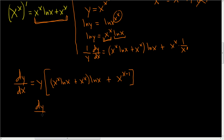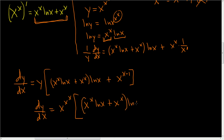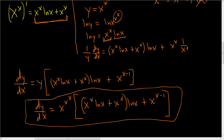So dy/dx — well, y was x to the x to the x. So the final answer is x to the x to the x times the bracket: x to the x times natural log of x, plus x to the x, in parentheses times ln x, plus x to the x minus 1. The key was to first find the derivative of x to the x, and then use that to find the derivative of x to the x to the x.